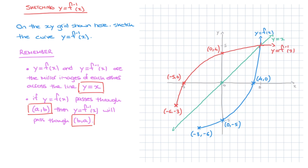Before I finish, it's worth pointing out that because of this second important rule — where the x and y-coordinates are swapped between a function and its inverse — the y-intercept of the original function turns into the x-intercept of the inverse function, and the x-intercept of the original function turns into the y-intercept of the inverse function. And that will always be the case, so do keep that in mind. And there we go — that's it for this example on how to sketch a function's inverse function.